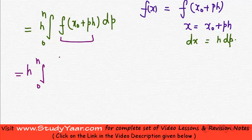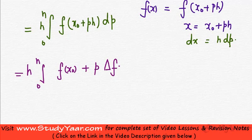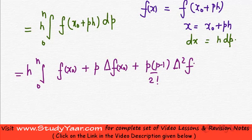You expand this using your Newton's forward integration formula. You have f of x0 plus p into delta f of x0 plus p into (p minus 1) upon 2 factorial delta square f of x0, and so on.